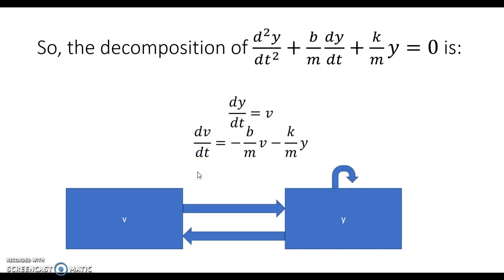So one thing that we do notice, I just want to point out, is that in terms of our dependencies here, we know that the rate of change of v depends on y. The rate of change of v depends both on v, on itself, and it depends on y. dy/dt depends on v.